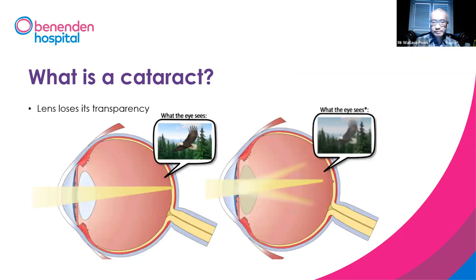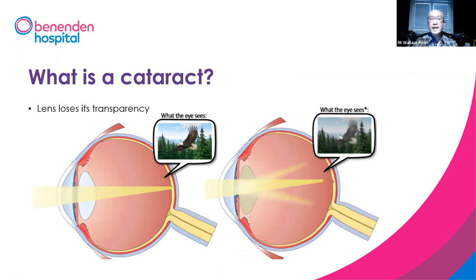What is cataract? Cataract means the lens loses transparency. The left diagram shows a very sharp image of the eagle you can see here. With the cataract, shown on the right side of the diagram, the image is compromised.